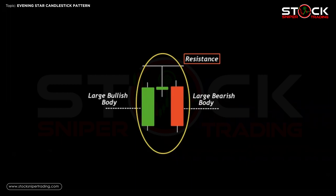It is a three-candle pattern: one short-bodied candle between a long green and red candle. Normally the star will have no overlap with the longer bodies, as the market gaps both on open and close. It signals that the buying pressure of the first candle is subsiding and a bear market is on the horizon.